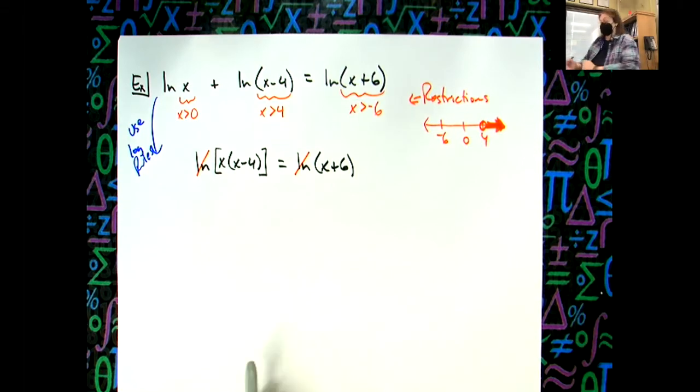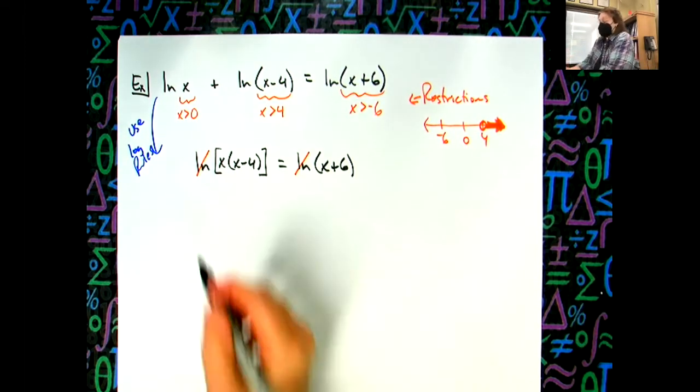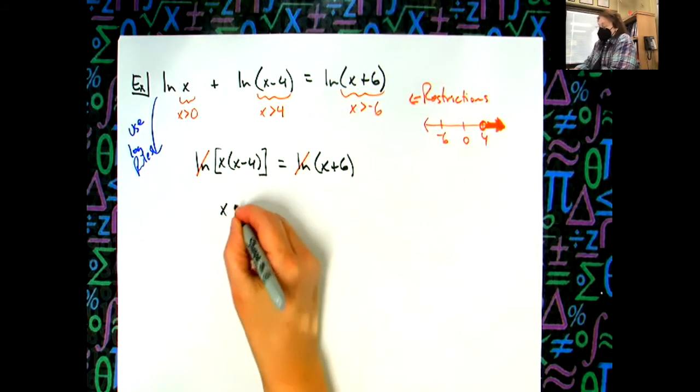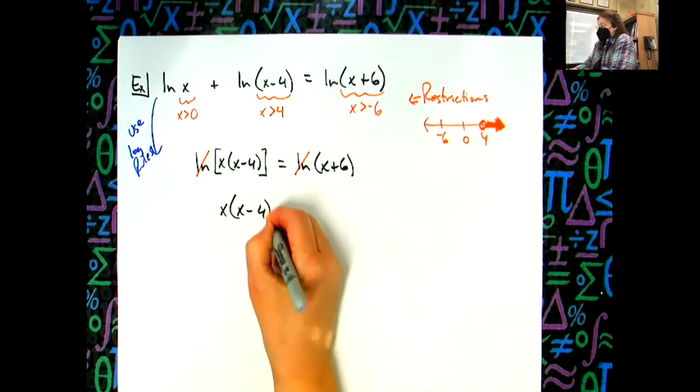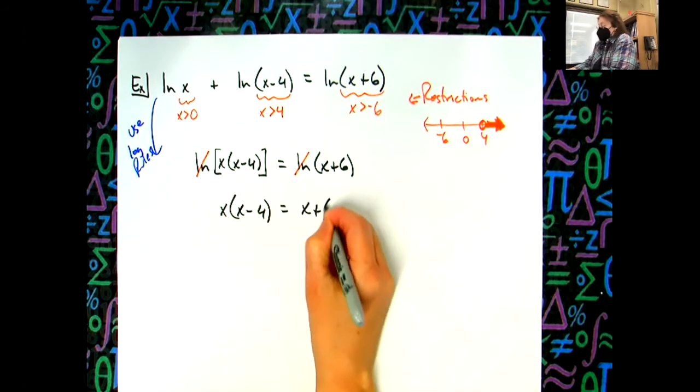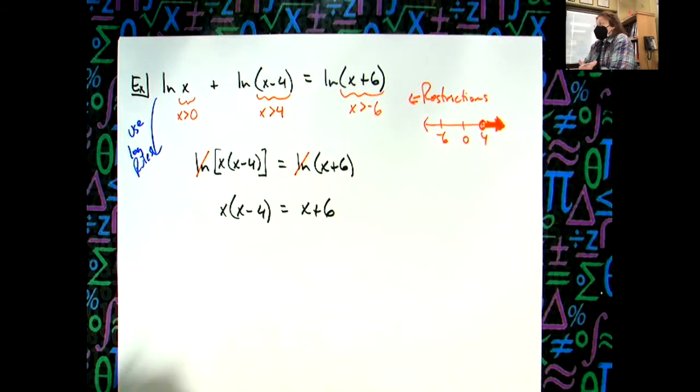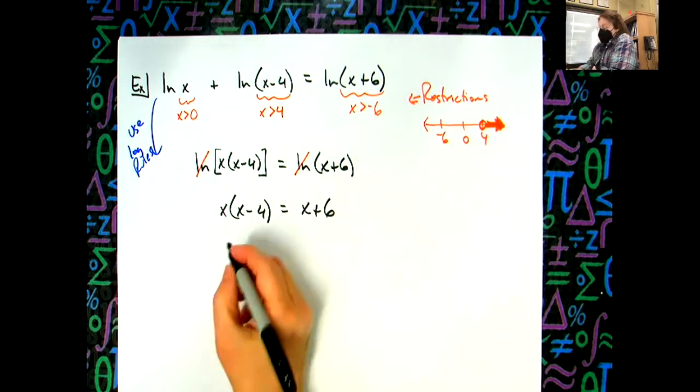Okay, so that's a property, it's a thing that we can do to solve our equations. We get down to there, now we've got an x times an x minus four and we've got an x plus six. So at this point, hopefully from this point on you should be fine. The only new stuff we're doing is applying those log rules.